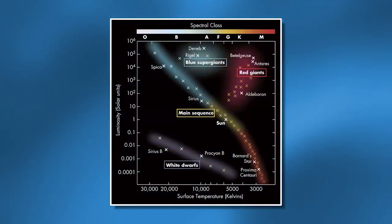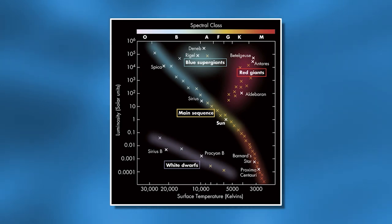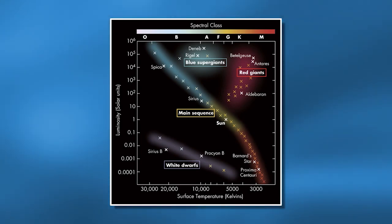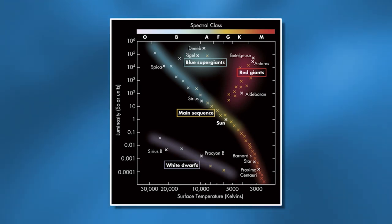Our sun, even though it appears really bright to us, would fall into this category of being a relatively low mass star. The first thing I want to do is take a look at these stars on something called the HR diagram that we introduced in the last lecture. On the HR diagram we take the two easiest to figure out variables of a star — the two easiest properties to determine — and we graph them against each other. When we do that, we pick out certain trends.